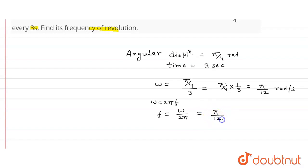π upon 12 divided by 2π. Here π upon 12 omega value, so this π and π cancel. So frequency will be 1 by 24 hertz. This will be the value of frequency. Thank you.